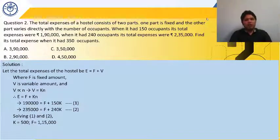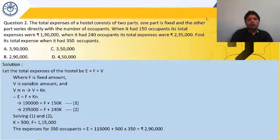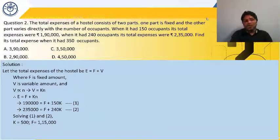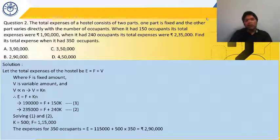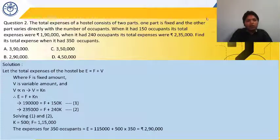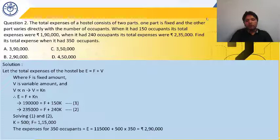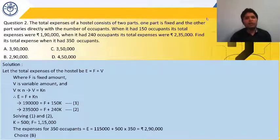Now for 350 occupants: E = F + KN = 1,15,000 + 500 × 350 = 1,15,000 + 1,75,000 = 2,90,000. So the answer is option B, Rs. 2,90,000. This is the clerical or traditional approach using two equations and two variables.